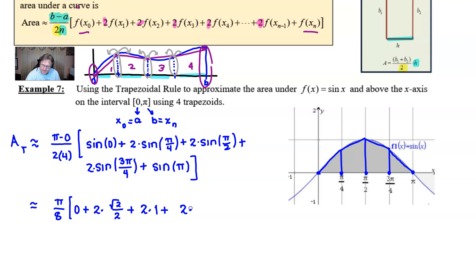The sine of three π over four, well, you're talking about quadrant two there in the unit circle. Sine is positive in quadrant two, so we can still use square root of two over two. Notice I'm using the rationalized version of one over square root of two here. It's going to make those twos cancel nicely. And then finally, the sine of π, which we all know is zero.